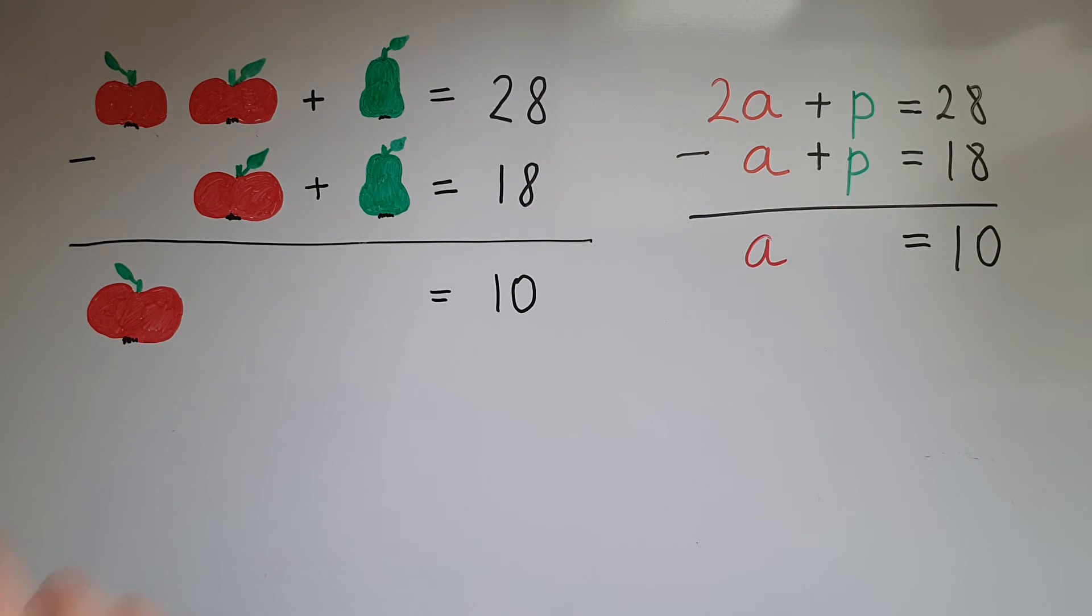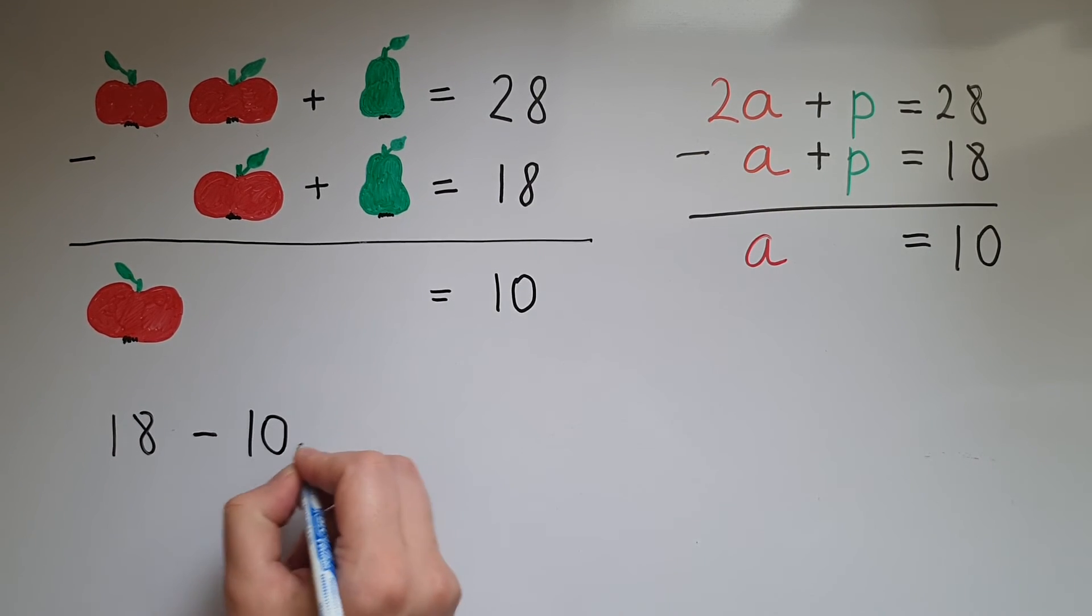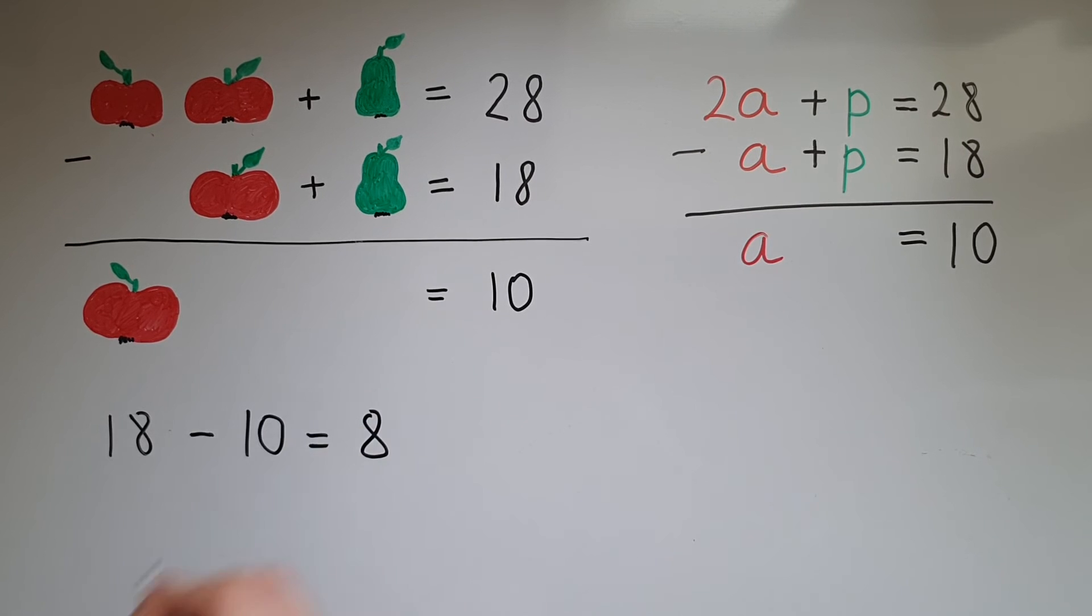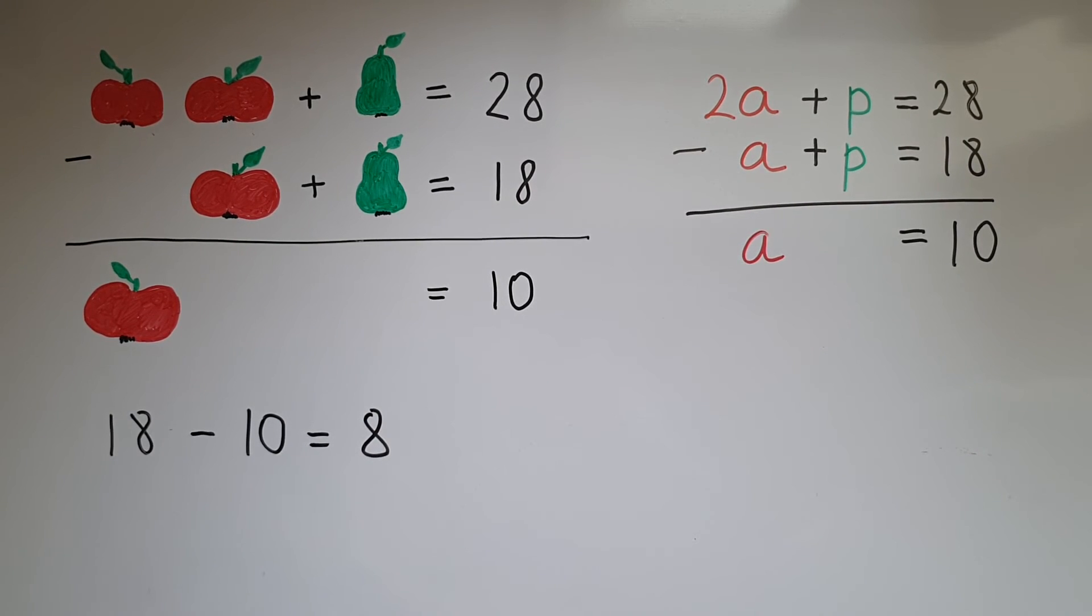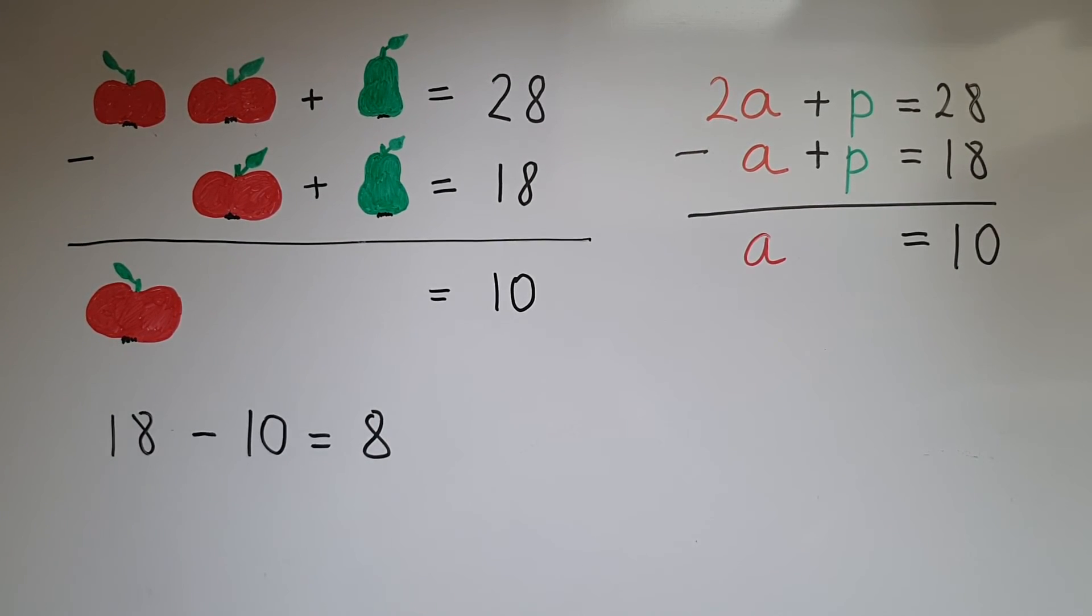So what is that number? That is 8 because 18 take away 10 gives me 8. So the price of the pear is 8 pence.